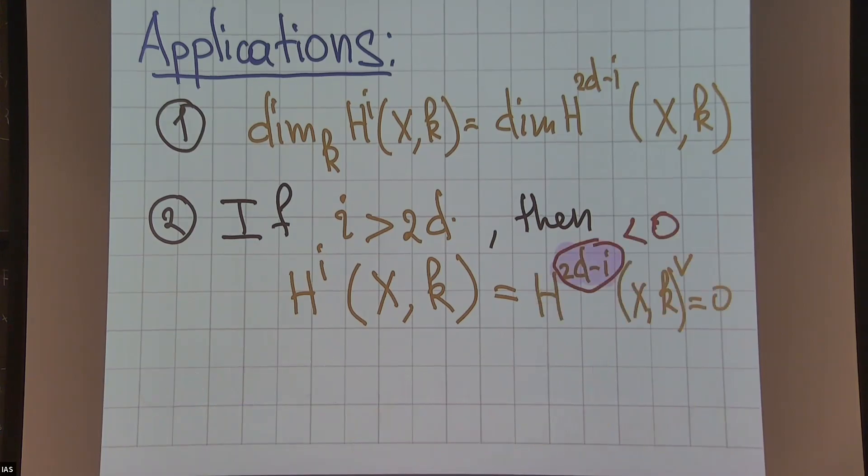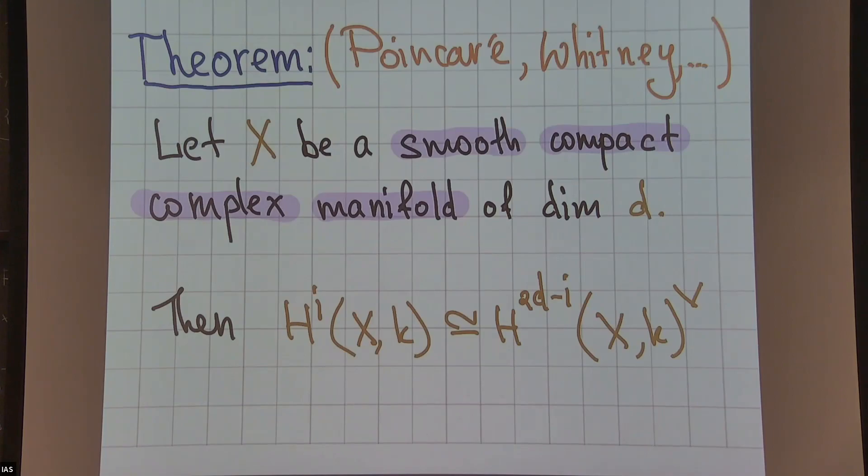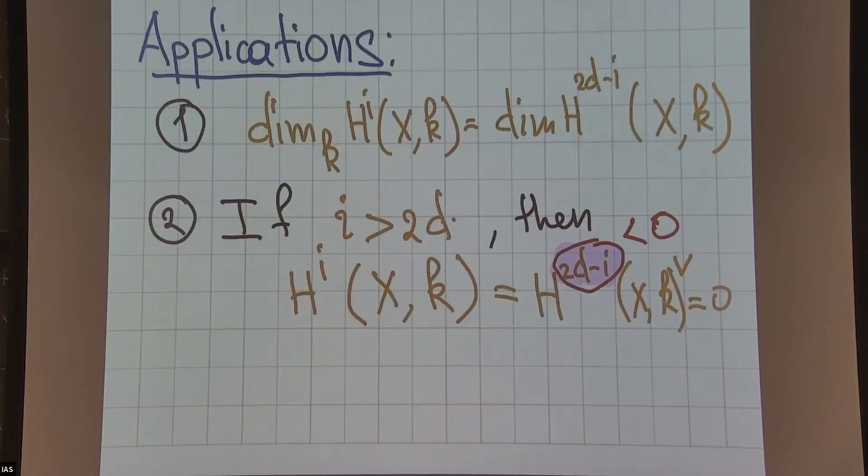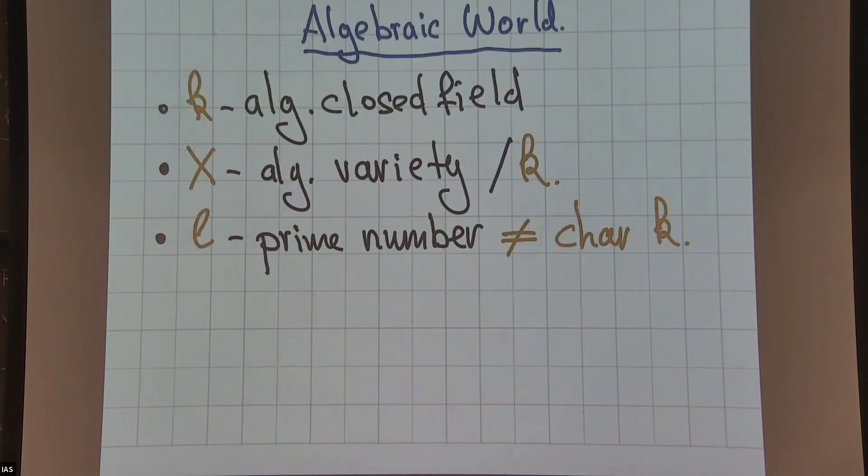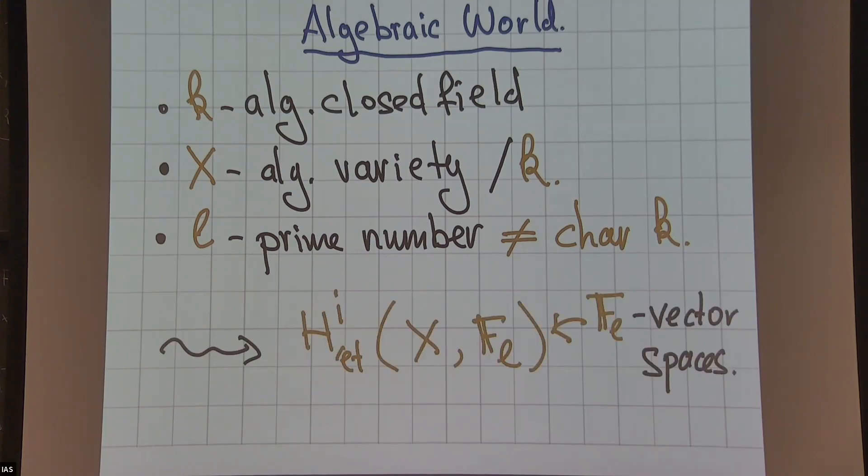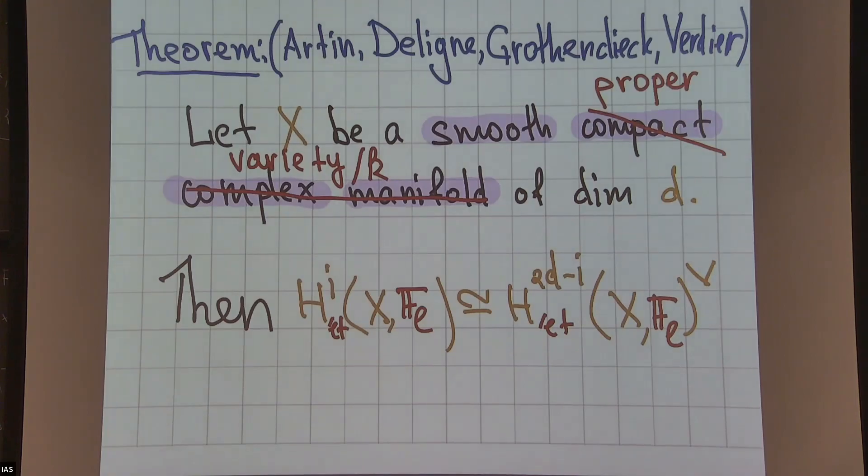Now, with that being said, I want to discuss some other situations. For the rest of the talk, a lot will be about other contexts when you can prove a similar result by changing some words in this formulation. The next context I want to discuss is the algebraic world. Here we fix an algebraically closed field k and a prime number ℓ which is different from the characteristic. For example, in characteristic zero you can allow any prime number. There is a theory of étale cohomology groups which associates an F_ℓ vector space to any such variety.